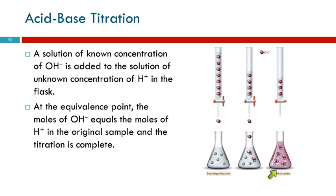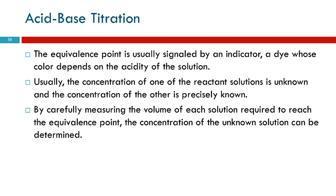That's the equivalence point. To get to the end point so that the color changes, we probably have to add at least one extra hydroxide ion, a little tiny bit extra to get the color to change. The indicator is just a dye and the color changes at the appropriate pH of the solution.